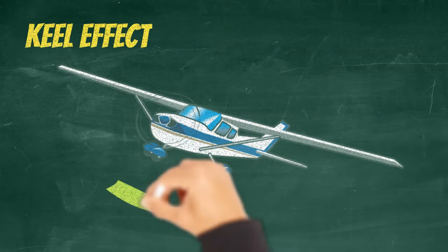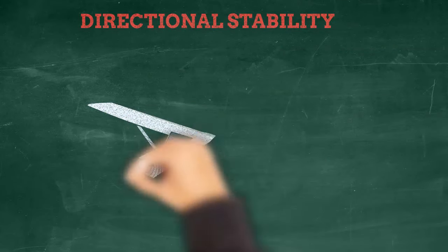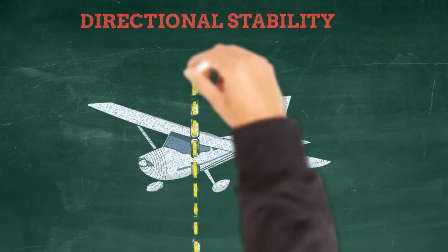Keel effect is something that affects high-wing aircraft. For these, anytime the airplane rolls, the weight of the aircraft will simply act as a pendulum and swing it back to level flight.